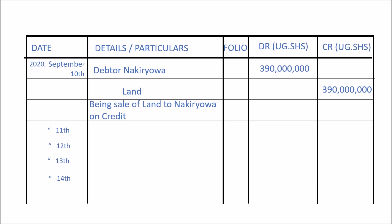An innumerable number of transactions takes place on an average business day. Because of this huge volume of transactions, the journal as a sole book of original entry becomes inadequate. It is because of this that the journal gets subdivided into other journals, which are determined by the nature of operations and the volume of transactions in a particular business.